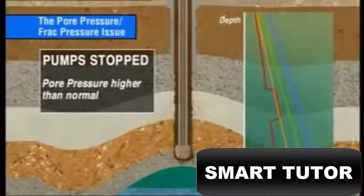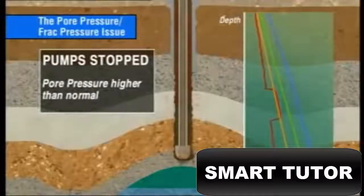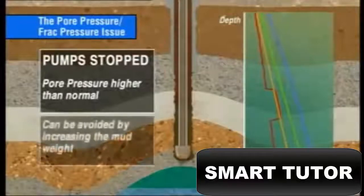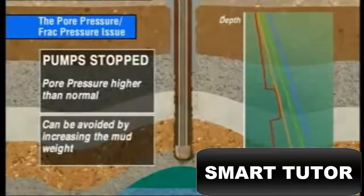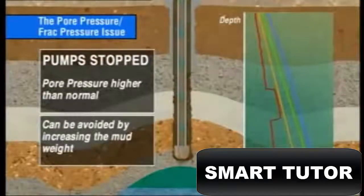This situation can be avoided by increasing the mud weight sufficiently to make sure that the hydraulic head of the static mud column is high enough to control the pore pressure when circulation is stopped.